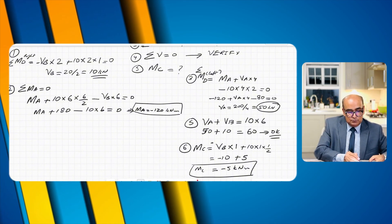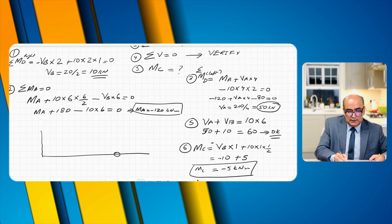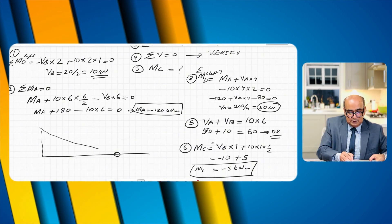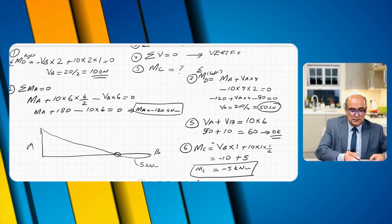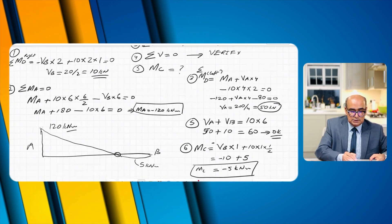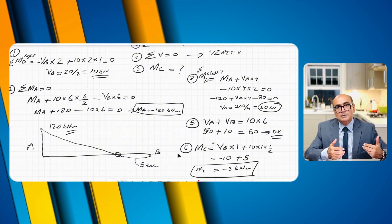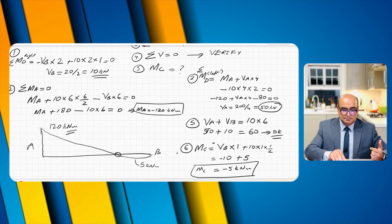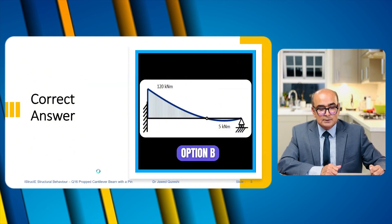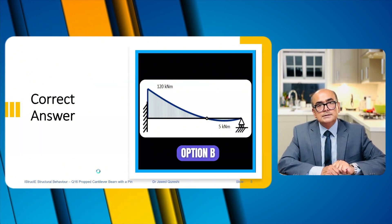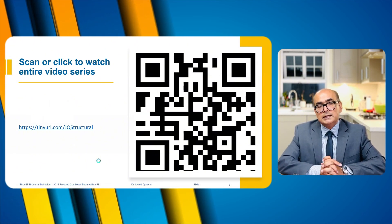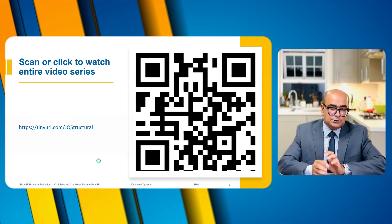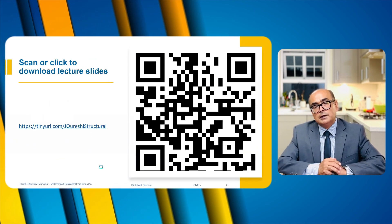Plotting the bending moment diagram: at the internal pin the moment is zero; the sagging moment is 5 kilonewton meters; at A the hogging moment is 120 kilonewton meters. The correct answer is option B with a hogging moment of 120 kilonewton meters and a sagging moment of 5 kilonewton meters. For other similar tutorials, visit the link or scan the barcode to access the full video series and downloadable slides.